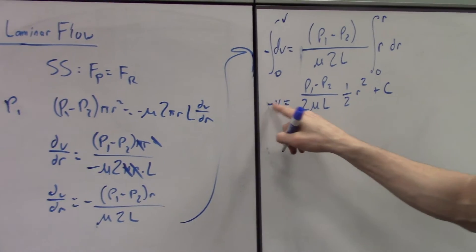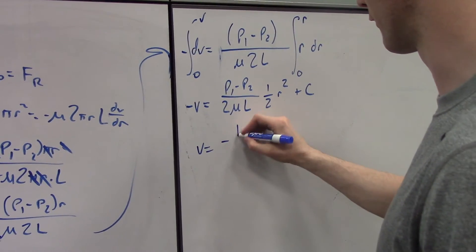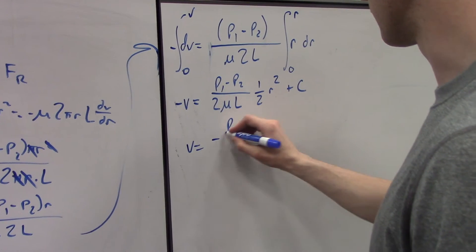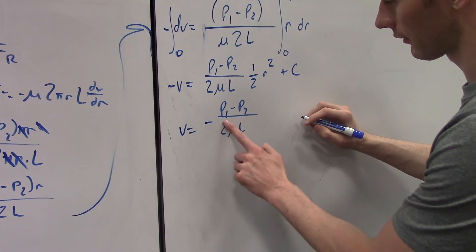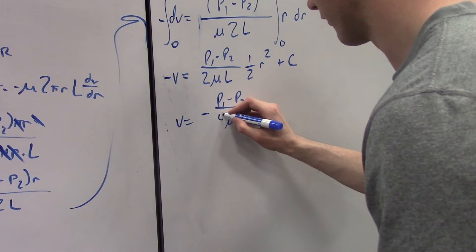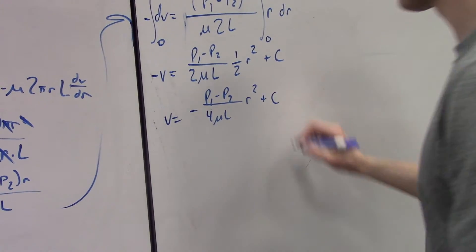Simplified, we'll take this. Velocity is equal to negative P1 minus P2 over viscosity L. So we'll multiply these, we get 4 viscosity L R squared plus C.